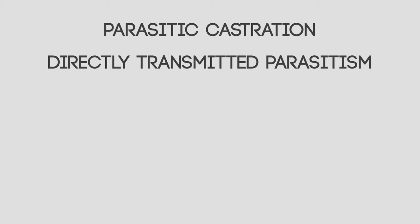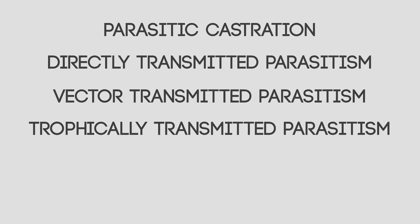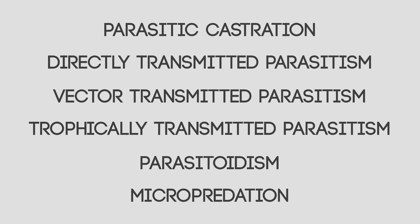There are six major strategies parasites use when exploiting a host: parasitic castration, directly transmitted parasitism, vector transmitted parasitism, trophically transmitted parasitism, parasitoidism, and micropredation. In this episode, we will be examining the first three of these exploitation strategies, using model organisms to illustrate each, and cover the final three in a part two.